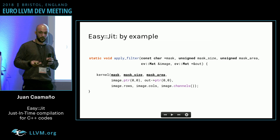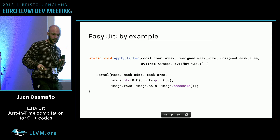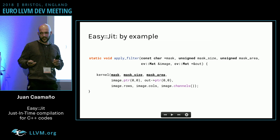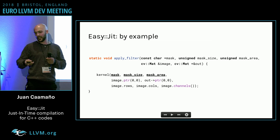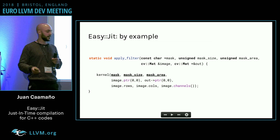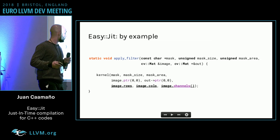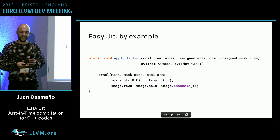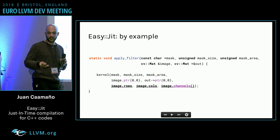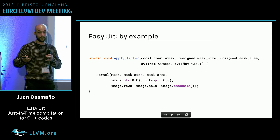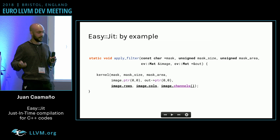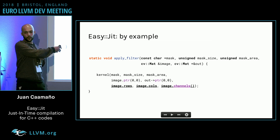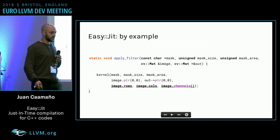We do not know a priori which values they are going to take, and they don't change that often because they are controlled by the user — he won't change the mask settings at every frame. On the other hand, we have the image dimensions. They typically remain fixed for a video stream, though they may occasionally change. It would be great if we could specialize the kernel function for these parameters.